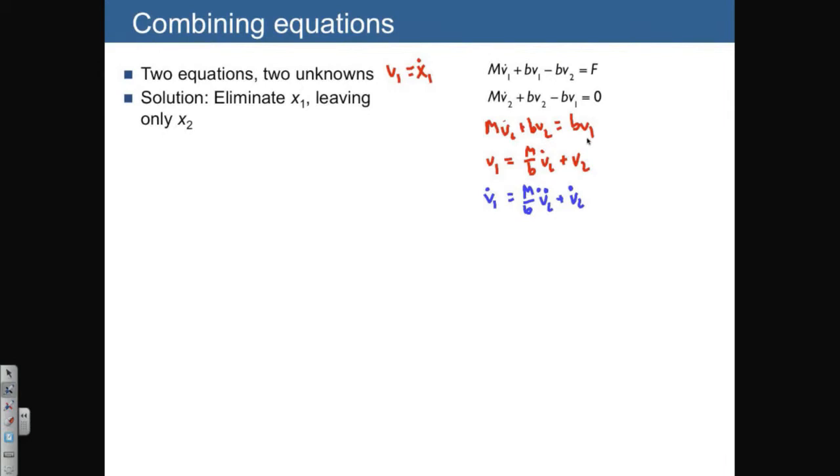Now let's take both of these. We can substitute both of these equations into our first equation. Remember the way we got here was we rearranged the second equation and now we have expressions for v1 and v1 dot.